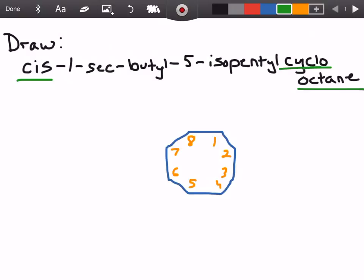Well we have cis-1-sec-butyl. So when we have cis, what it tells us is that the 1-sec-butyl and the 5-isopentyl are going to be on the same side of the molecule. Cis is same. So that's really good to know.